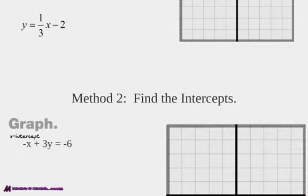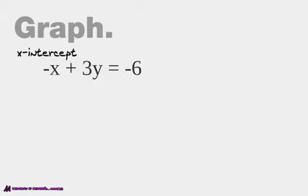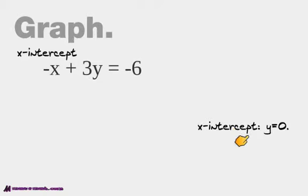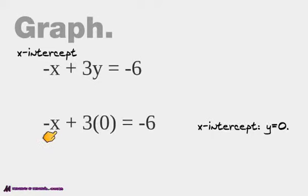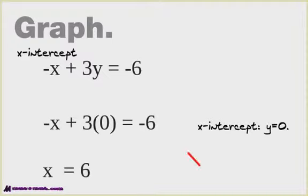The other way to do this is to find the intercepts. An intercept is where the line hits the x-axis or the y-axis. First we're going to find the x-intercept with this equation. Do you know what y equals when the line hits the x-intercept? Y equals 0 when the line hits the x-intercept. So we take 0, plug it back in, and we get negative x plus 3 times 0 equals negative 6. Solving that out, we get x equals 6. So our x-intercept is (6, 0) — that's our first point.